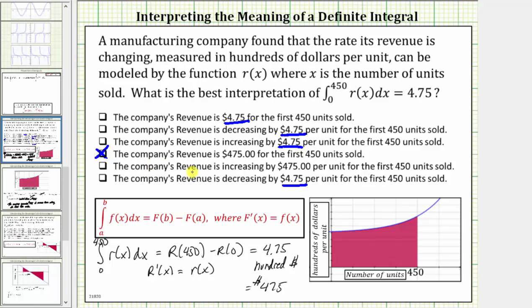However, let's also look at this sentence. This sentence reads the company's revenue is increasing by 475 dollars per unit for the first 450 units. This is not correct because the 475 is the total revenue generated, not the rate of increase of revenue, and therefore this sentence is not correct. I hope you found this helpful.